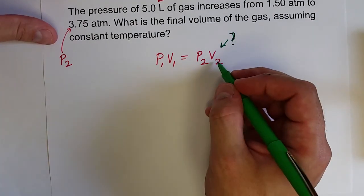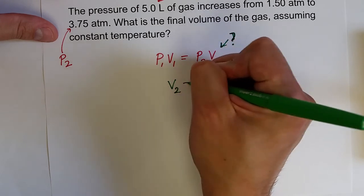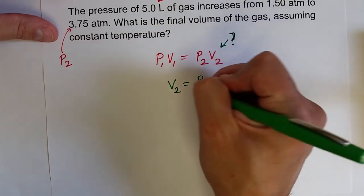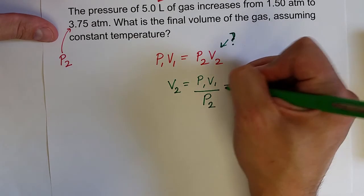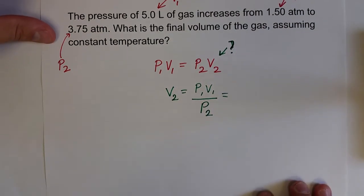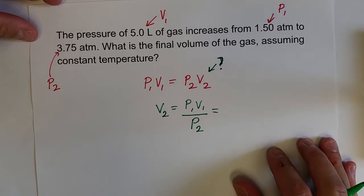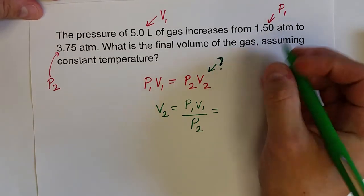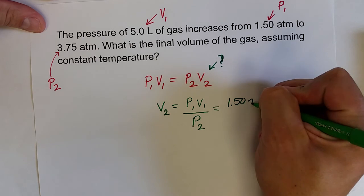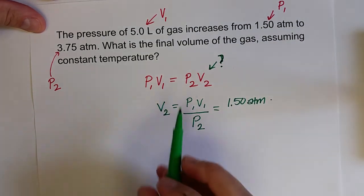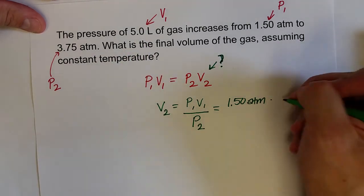We need to solve for this, so we need to get V2 by itself. We divide both sides by P2, so V2 equals P1 times V1, all over P2. Then we can just input our variables. P1 is 1.5 atm, V1 is 5.0 liters.